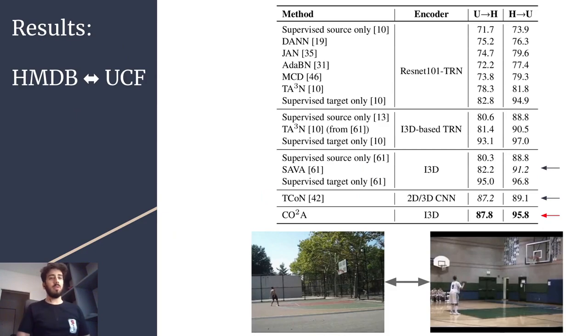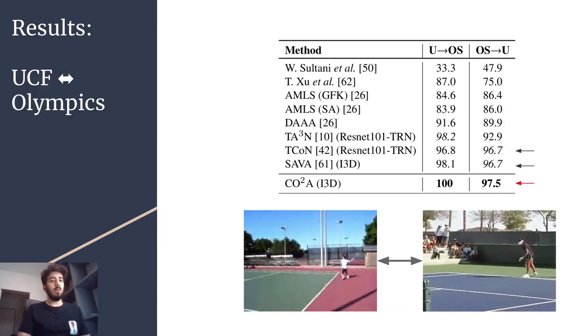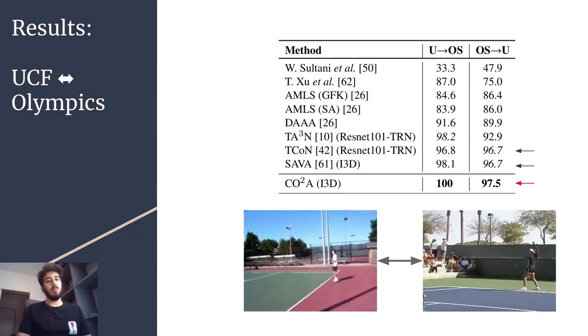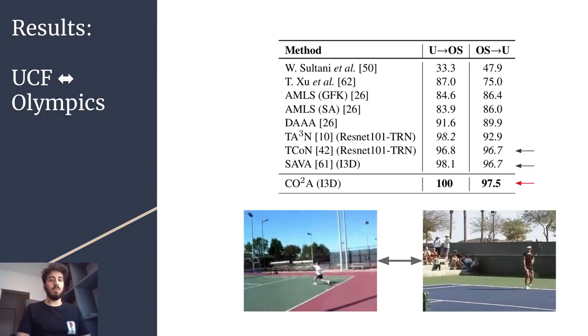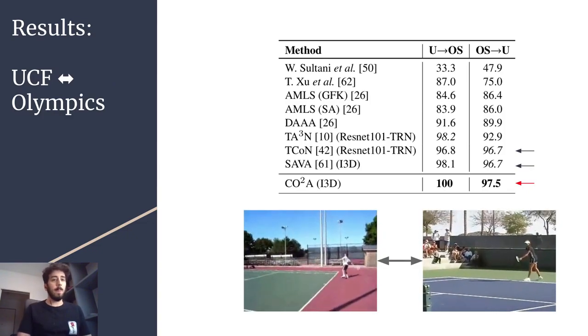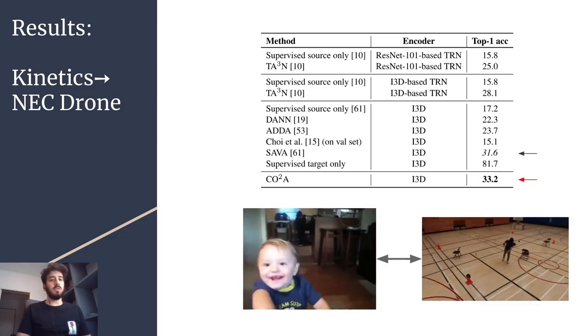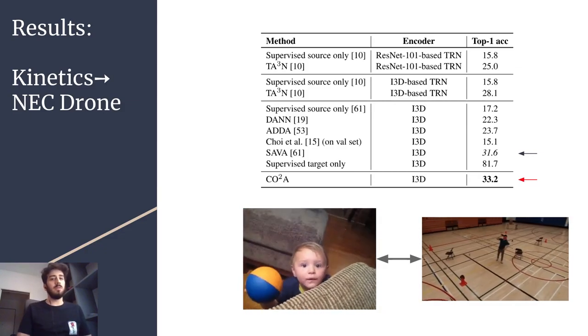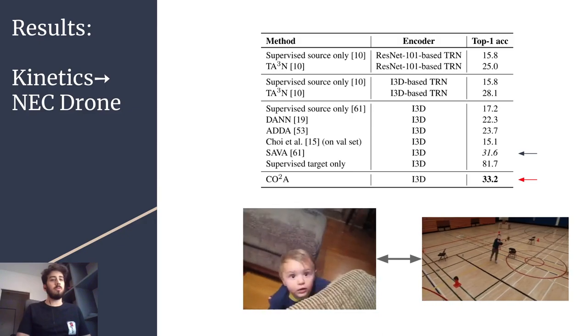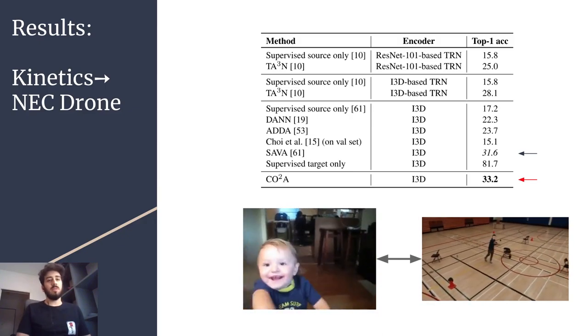We tested our method on different datasets. First for UCF-HMDB, we report better results than our closest competitors, which are highlighted by black arrows. We also tested on UCF Olympics, where our results are also better, although the scenario is very saturated. On kinetics to Nectron, which is a much harder scenario where the domain shift consists of using a drone to capture the actions, we also surpassed the previous competitor.